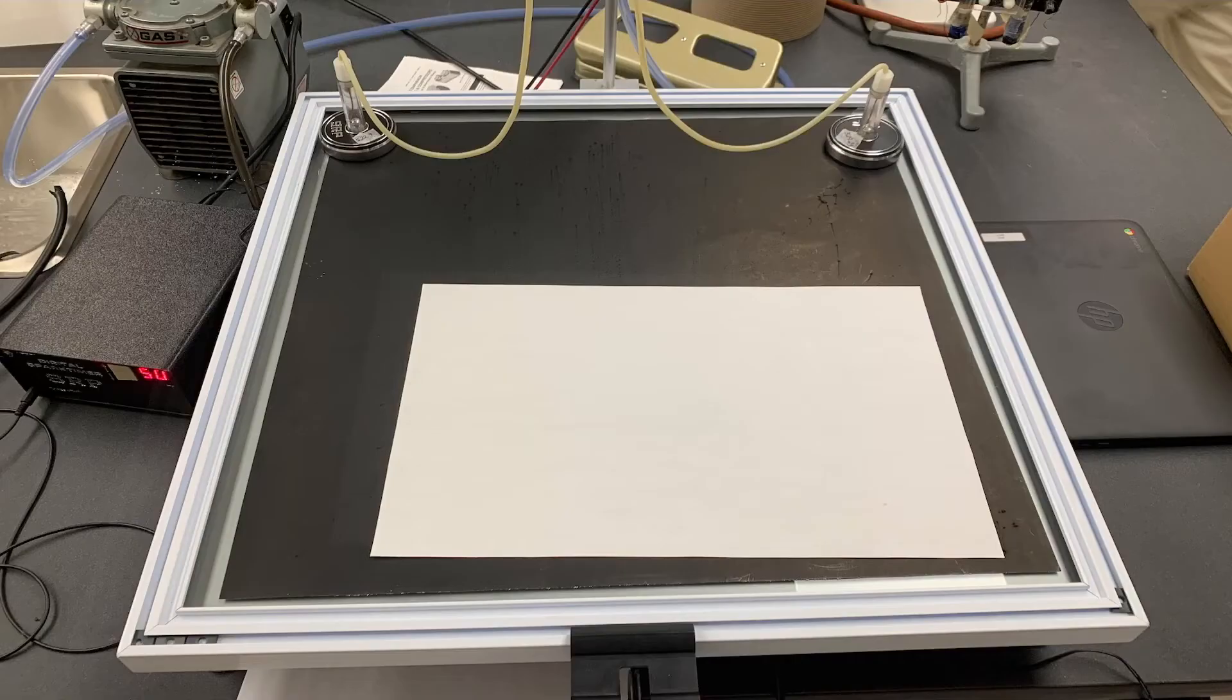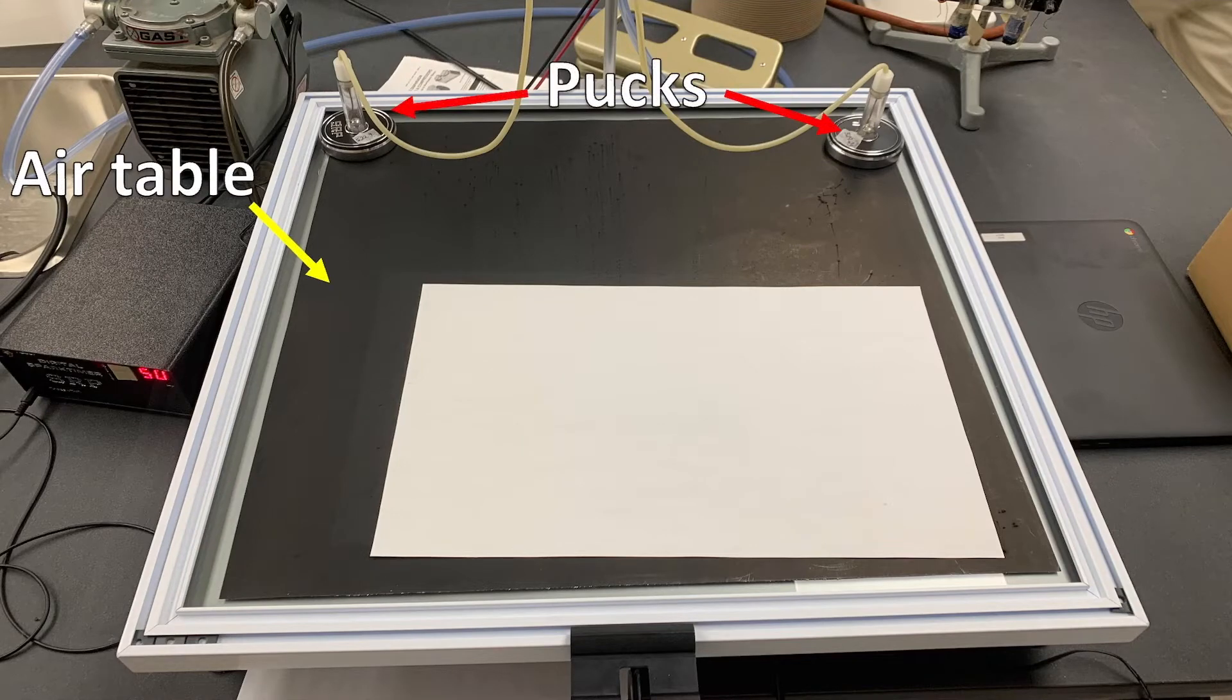The collision is going to occur on this air table between these two pucks or masses. The reason we're using this air table is to try and remove as much friction as possible.